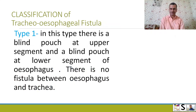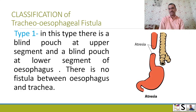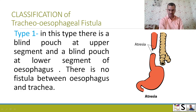First is Type 1. In this type, there is a blind pouch at the upper segment and a blind pouch at the lower segment of the esophagus. There is no fistula between the esophagus and trachea. As you can see, these are pouches with no communication with the trachea — this is atresia only. This is Type 1.